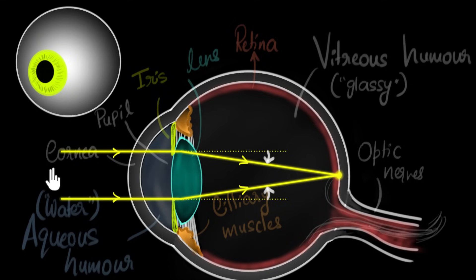So when the object is far away, the required power is less. And so the required curvature of our lens is also less. In such case, the ciliary muscles will be relaxed like what's shown over here.